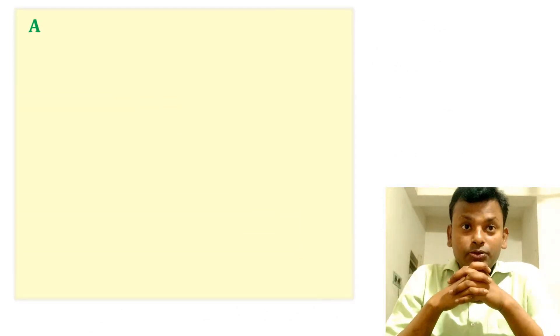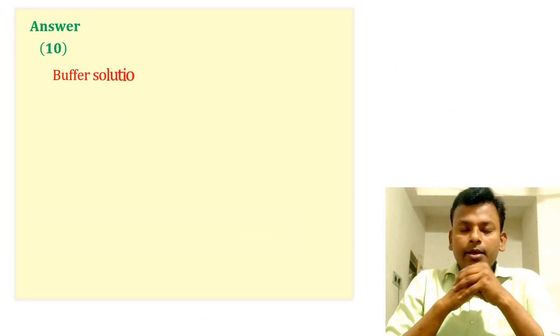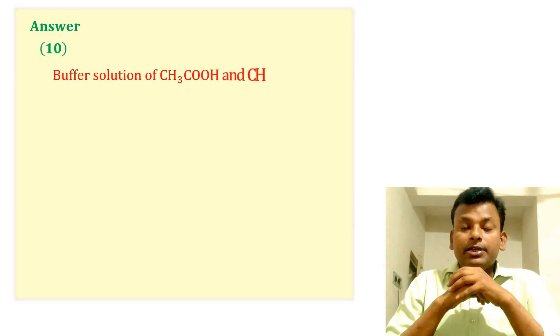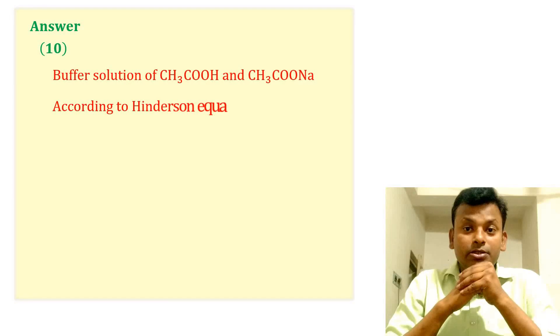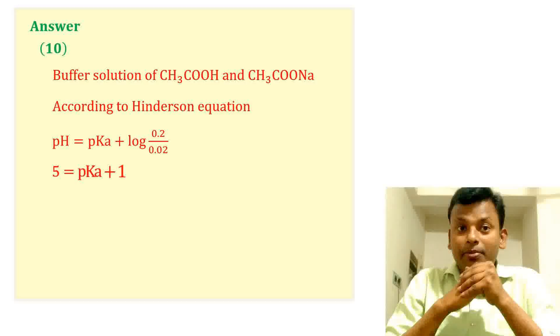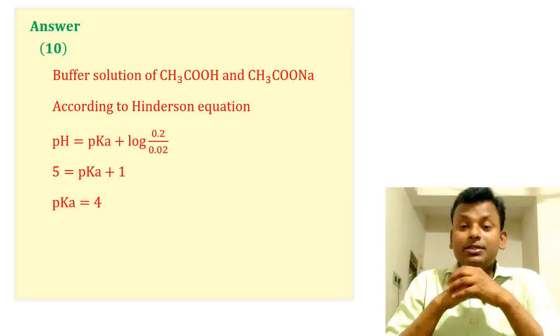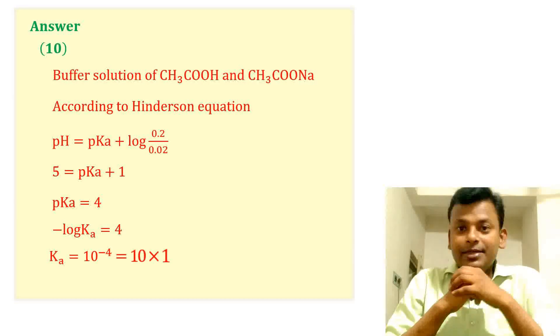Answer is 10. Buffer solution of CH3COOH and CH3COONa. According to Henderson equation, pH equals to pKa plus log 0.2 by 0.02. Putting all the values, Ka equals to 10 to the power minus 4, that is 10 into 10 to the power minus 5. So answer is 10.